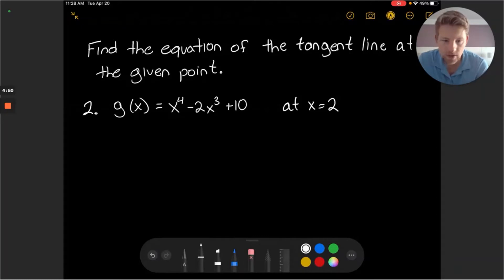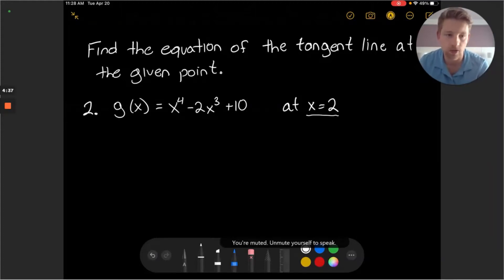Here we have a g of x function and we'd like to find the equation of its tangent line at the point x equals 2. So let's begin by finding the functional value at this point x equals 2.